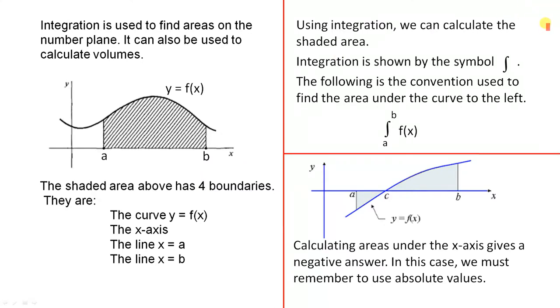Using integration, we can calculate the shaded area. Integration is shown by the symbol, like an s sign. The following is the convention used to find the area under the curve to the left. The area under this curve is the integral from a to b of f(x) dx. We're finding the area between those two lines, the curve, and the x-axis.